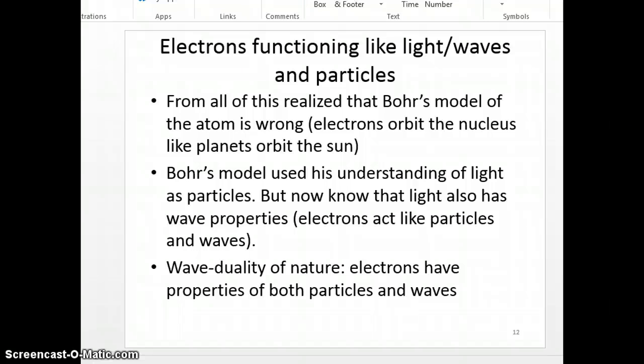From all of this, then Bohr realized that his model of the atom was wrong. Electrons, and what he said originally was electrons orbit the nucleus like planets orbit the sun. Bohr's model used his understanding of light as particles, but now they know that light also has wave properties. So electrons act like particles and waves. So now they're considering electrons in two different states. And from that came the wave duality of nature. Electrons have properties of both particles and waves.